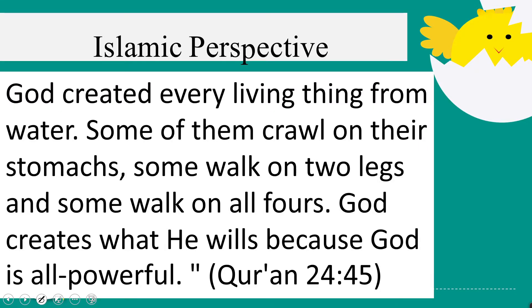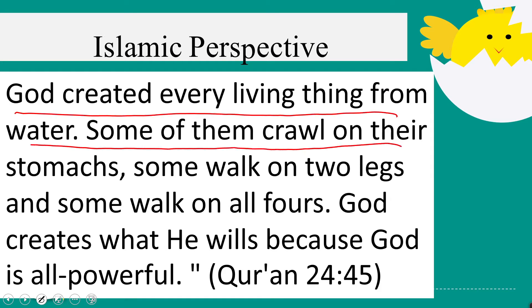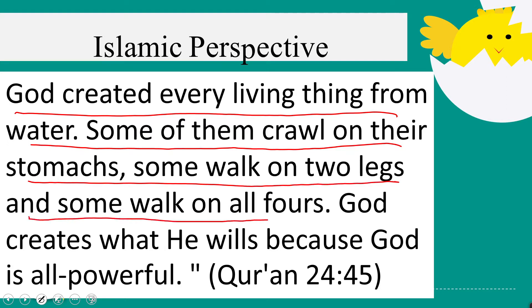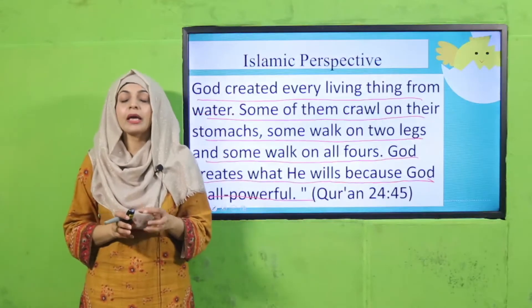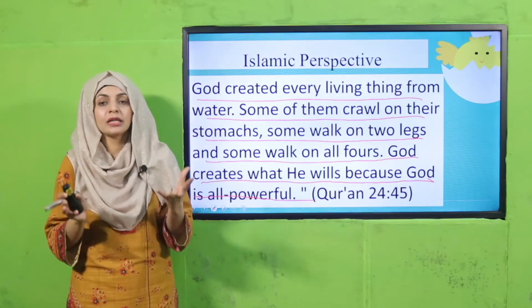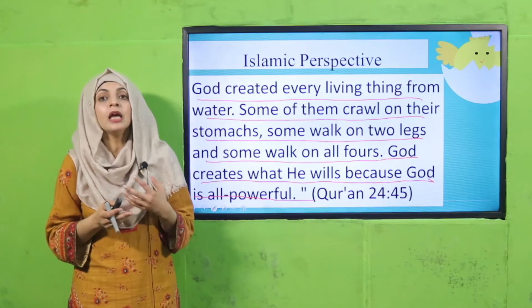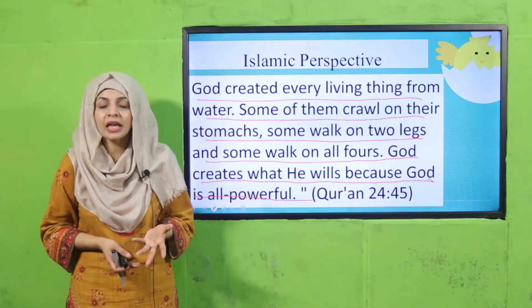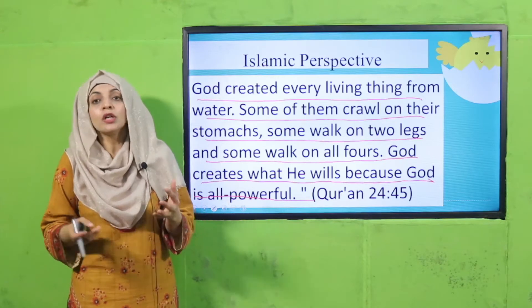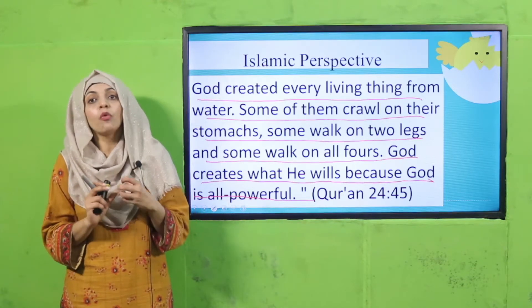Let's quickly look at the Islamic perspective. God created every living thing from water. Some of them crawl on their stomachs, some walk on two legs, and some walk on all four. God creates what He wills because God is all powerful. Allah Taala in the Quran tells us that He has created many kinds of animals — some walk on four legs, some on two, some fly, some crawl, and some swim. Allah's creation is vast and wonderful.